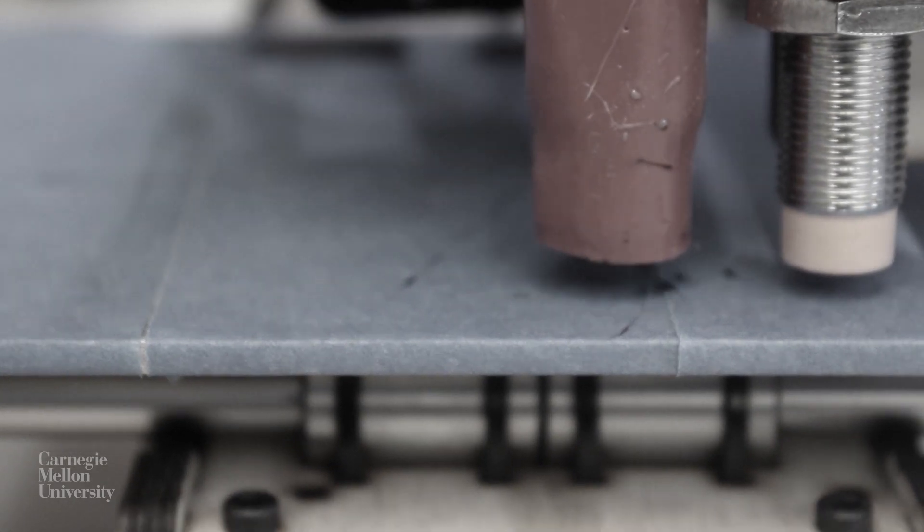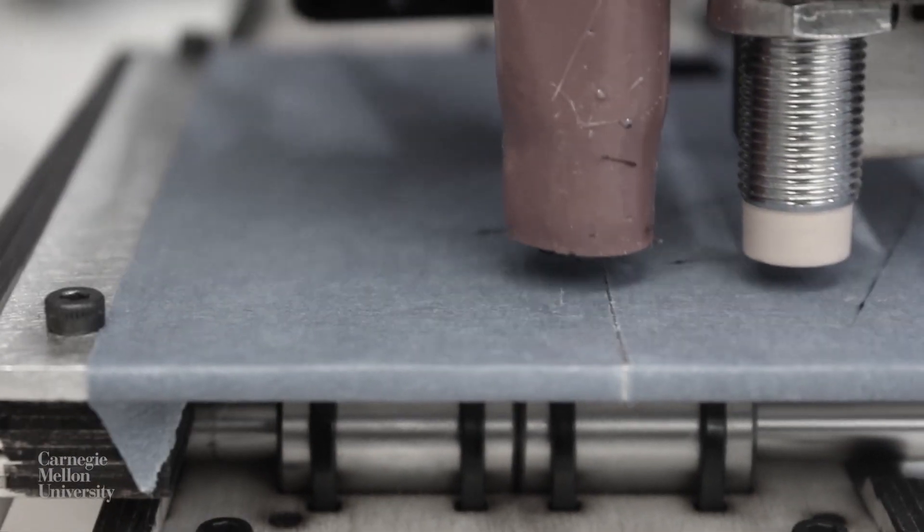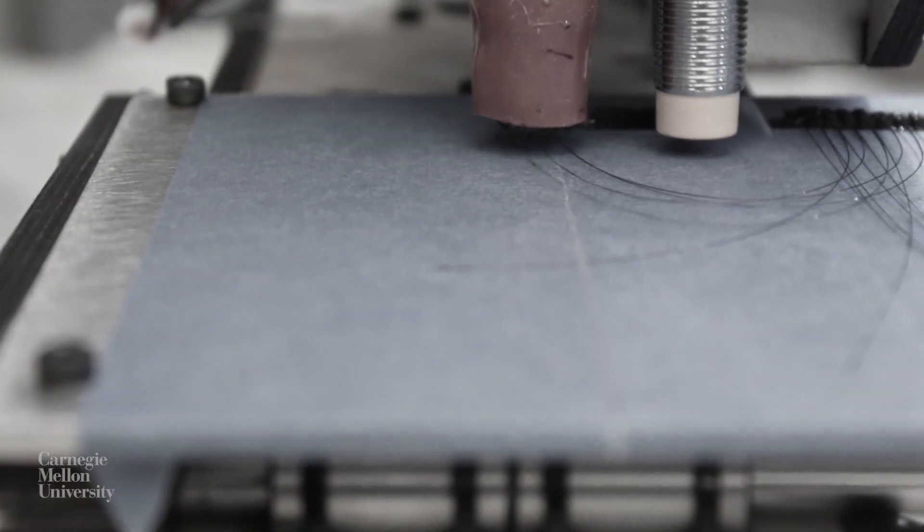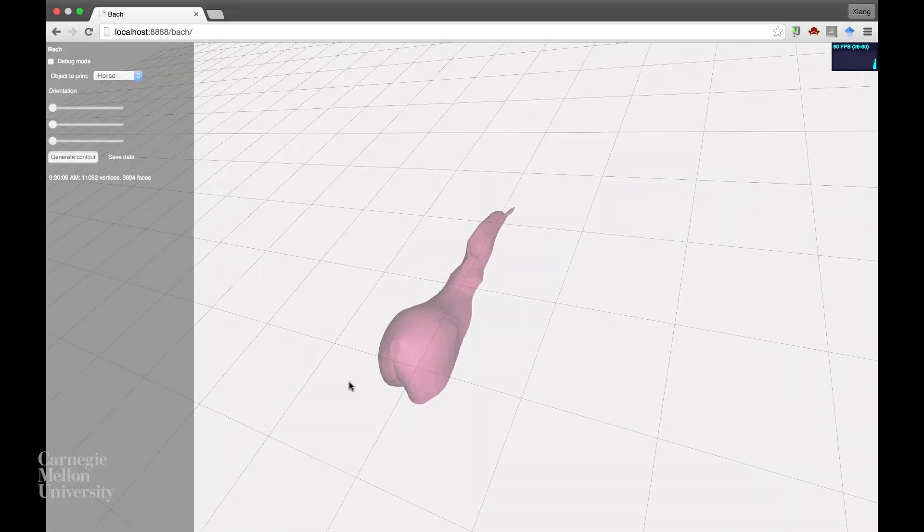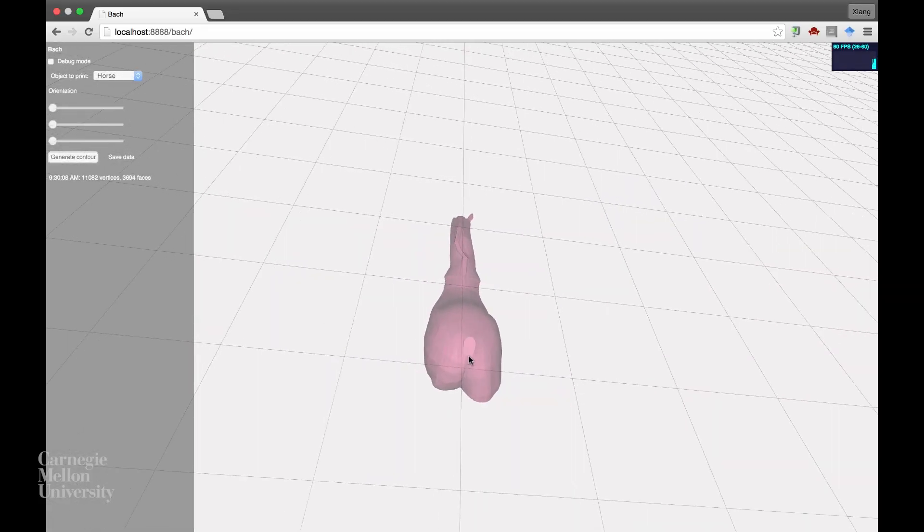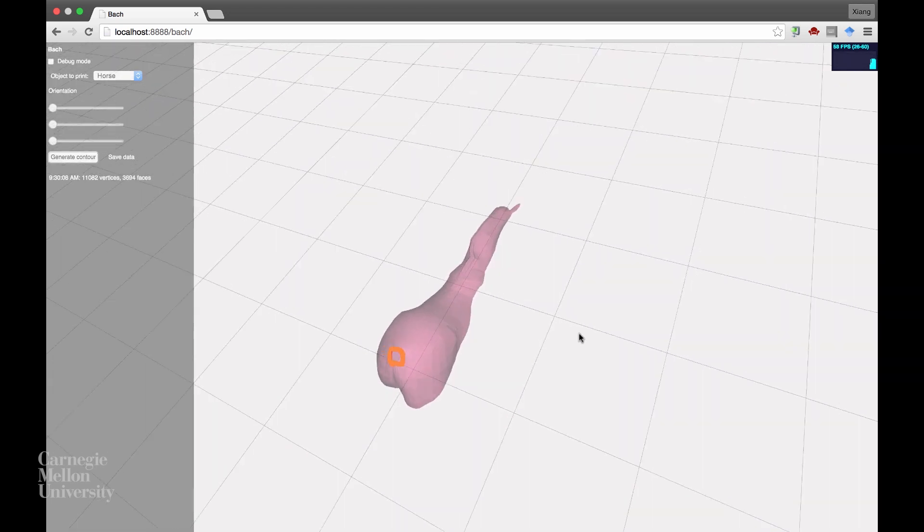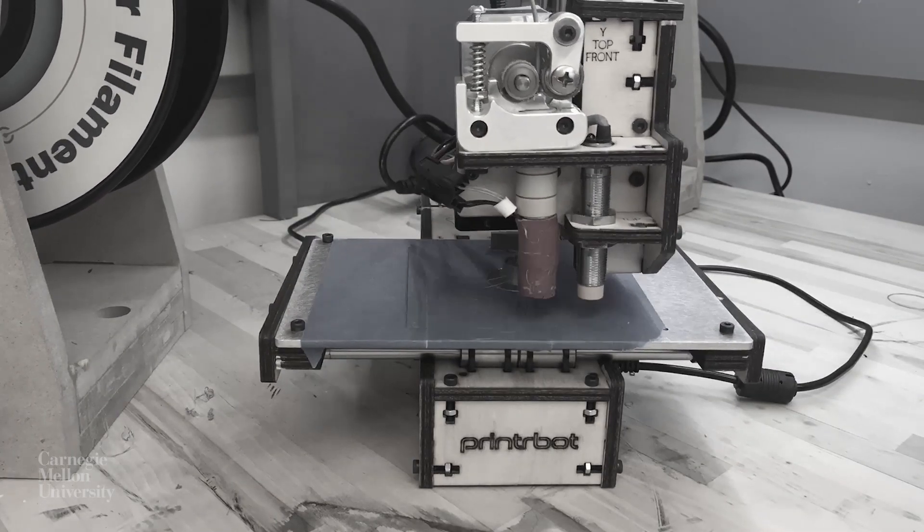We can produce strands of hair, fiber, and bristle which can be added to printed models. Our technique is simple and easy to integrate with existing 3D printing workflows. Users can specify regions on their model where hair should be incorporated.